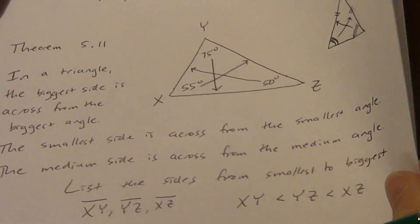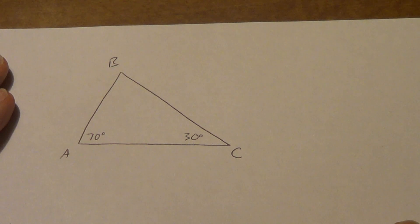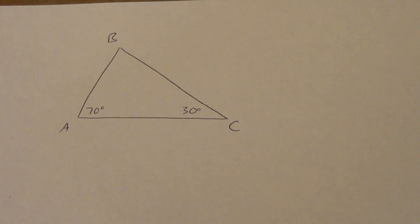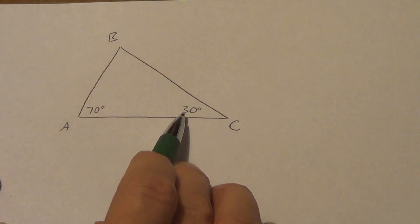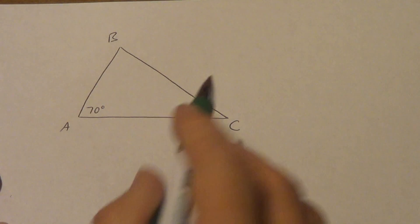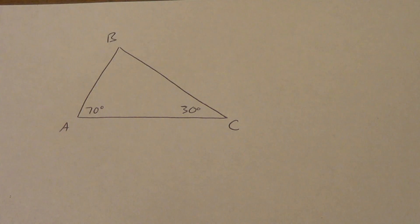This theorem is pretty easy. I'm going to give you two examples to do, one for each theorem, and then we'll be done with this video. So copy this triangle onto your paper — it has angles of 70 degrees and 30 degrees — and list the sides from smallest to largest. Pause the video, do it, come back, and check your answer.